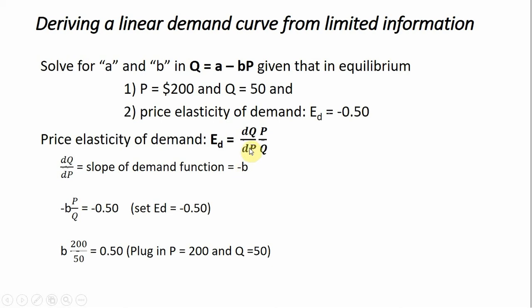What I'm going to do now is start substituting things into this elasticity of demand formula. We know that the first half of this is minus B, so that's what I have down here. The second half I'm just going to rewrite: it's price divided by quantity. And now I'm going to set this price elasticity of demand formula equal to minus 0.5, because that's what we're told is happening in equilibrium.